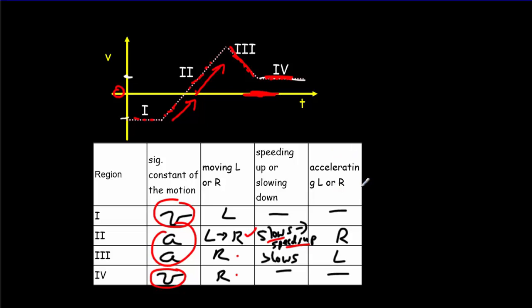And then, for the acceleration, we're looking for positive or negative slope. Of course, it's only here and here that we have any acceleration at all. And in region 2, we've got a positive slope, so we're moving to the right. Region 3, we've got a negative slope, and that means we're moving to the left.